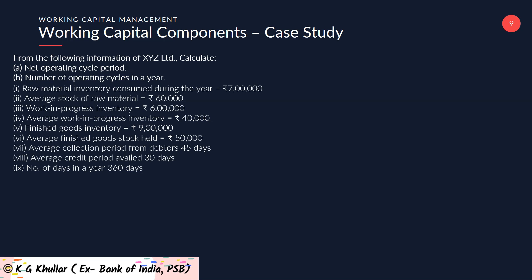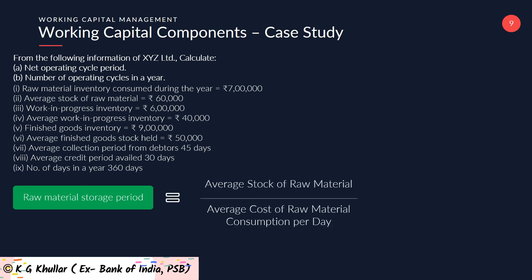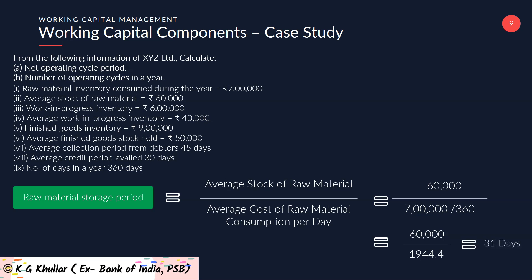Let us calculate the net operating cycle. First, raw material storage period R equals average stock of raw material divided by average cost of raw material consumed per day. That is 60,000 divided by 7 lakhs divided by 360. Please note it is divided by 360, since the firm takes 360 days as one year — so don't divide by 365; always check the period assumed by the firm. On solving, you get 60,000 divided by 1,944.4, which equals approximately 31 days.